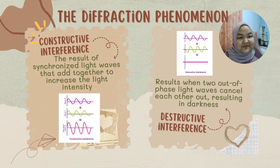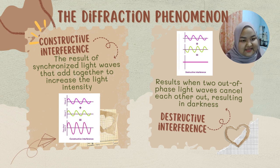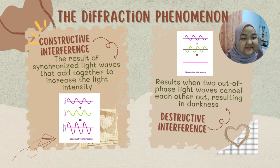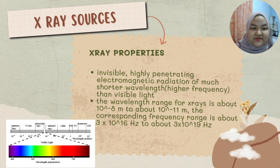There are two types of diffraction phenomena: constructive interference and destructive interference. Constructive interference is the result of synchronized light waves that add together to increase the light intensity, while destructive interference results when two out-of-phase light waves cancel each other out, resulting in darkness.